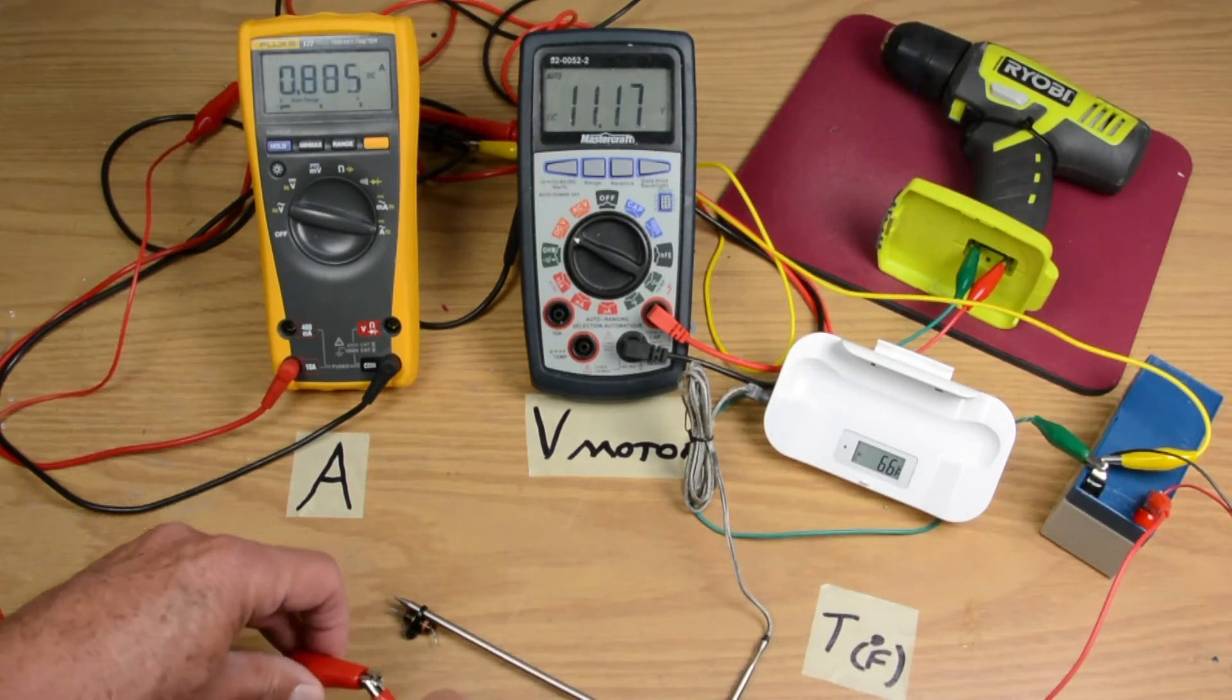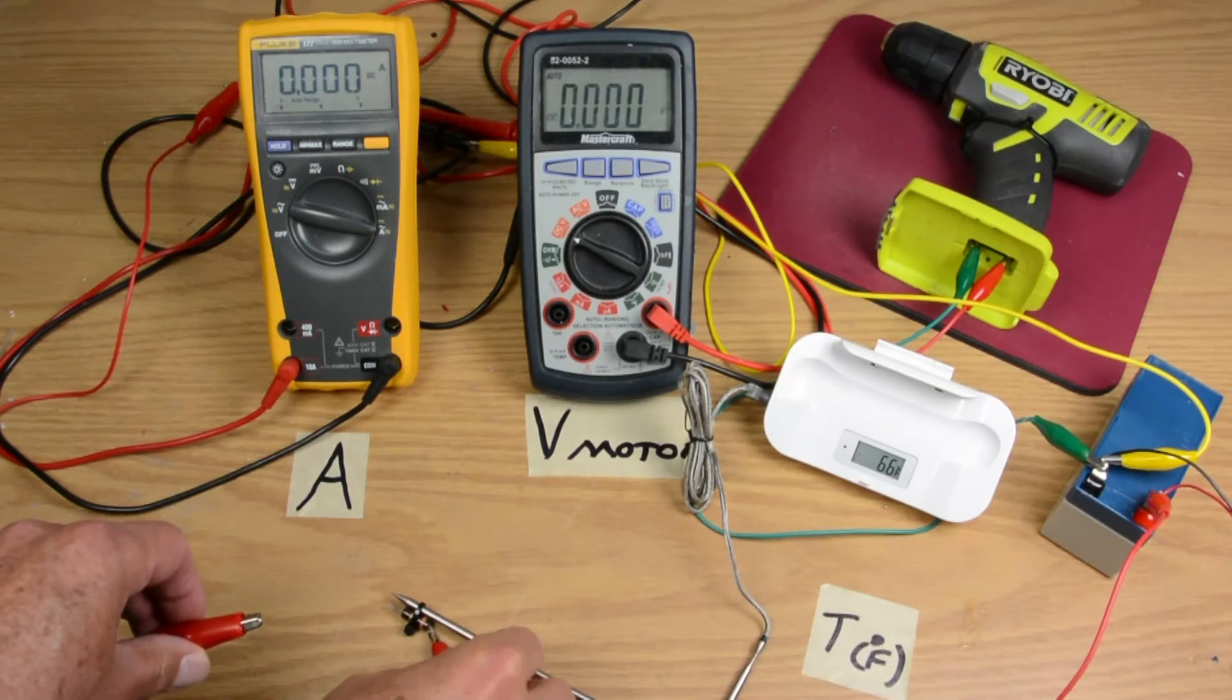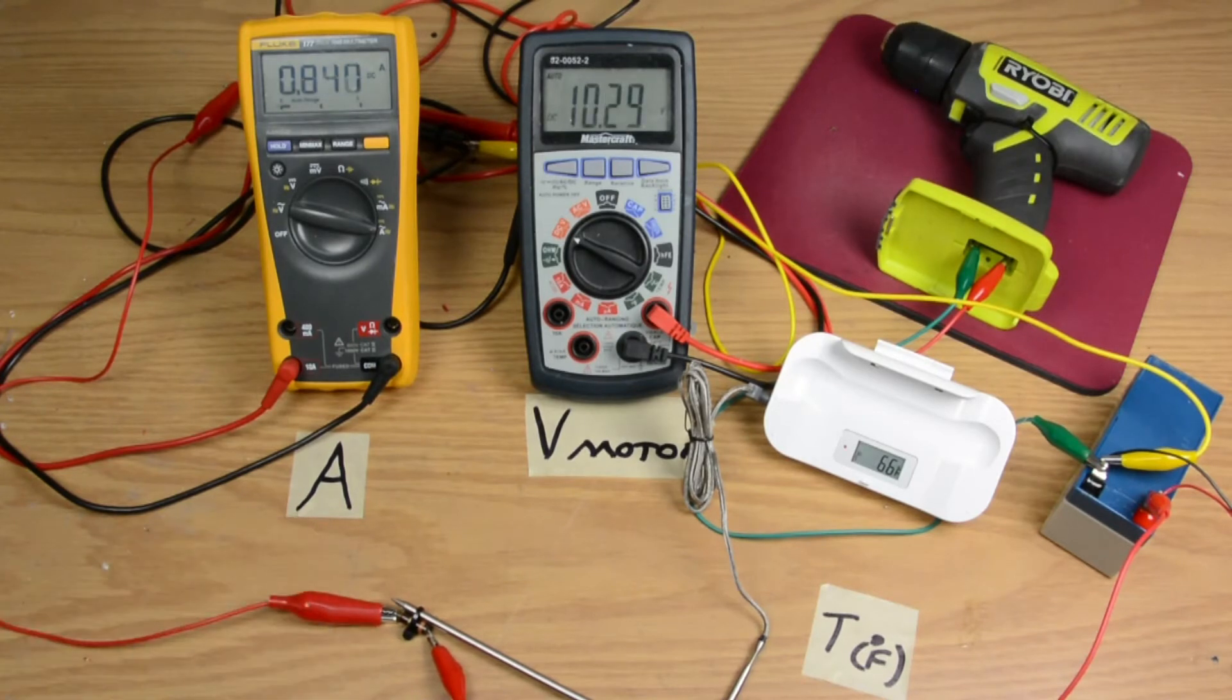So now if I put this 1 ohm resistor in the way instead of about 11.2 volts what we're going to have is 10. So because there's 1 amp going through a 1 ohm resistor it will drop about 1 volt. So you can hear that the motor is going quite a bit slower, it's having a hard time doing what it's having to do.